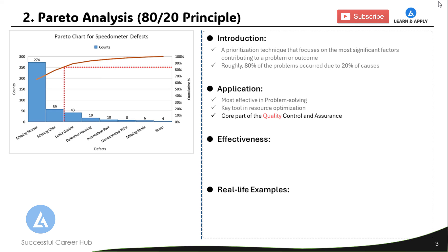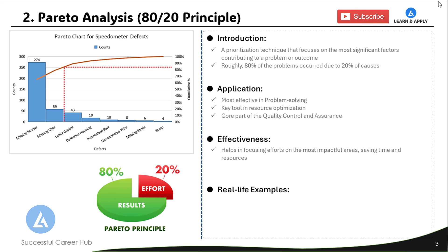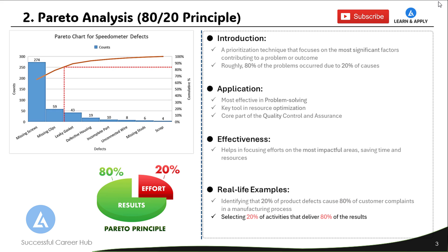Pareto analysis is effective because it helps focus efforts on the most impactful areas, saving time and resources. Real life examples include identifying that 20% of product defects cause 80% of customer complaints in a manufacturing process, and selecting the 20% of activities that deliver 80% of the results.